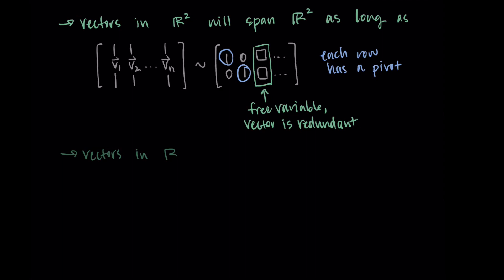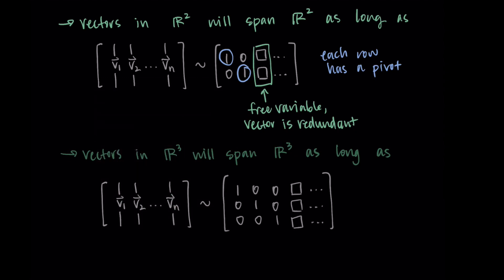Similarly, vectors in R3 will span R3 as long as a similar thing holds. We make the vectors into columns, row reduce, and need all three rows to each have a pivot. Then any fourth column onward could be a free variable. The important thing is that we have three unique directions — one from each row — and this spans R3. If we only have two pivots, we only have two unique directions, which isn't enough to span R3.